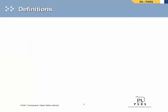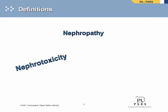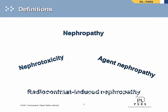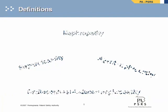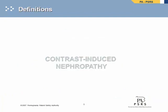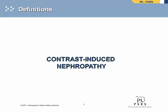Over the past 50 years, this complication has had no consistent name or definition. For example, it has been called contrast nephropathy, contrast nephrotoxicity, contrast agent nephropathy, and radio-contrast-induced nephropathy. But these terms refer to the same entity, which in this presentation will be called contrast-induced nephropathy, or CIN.